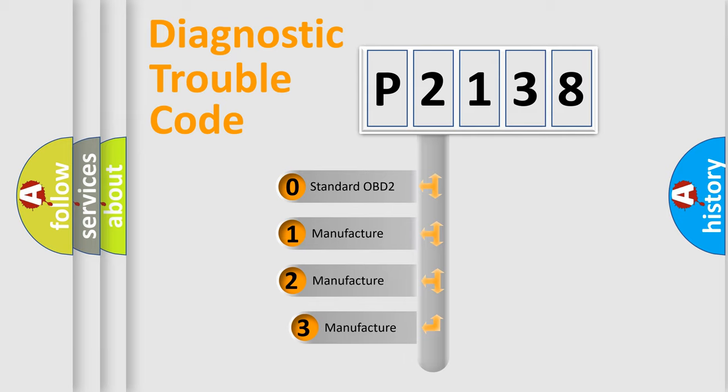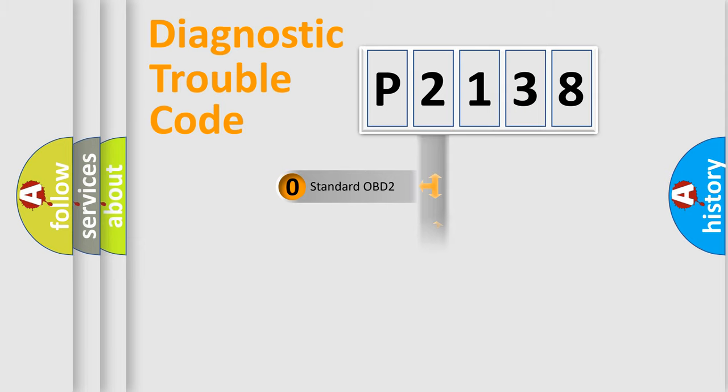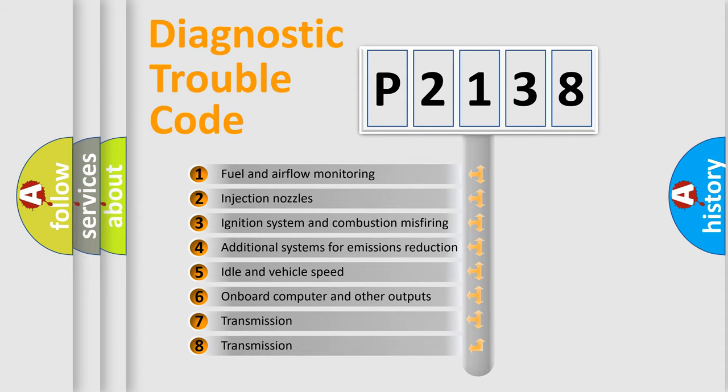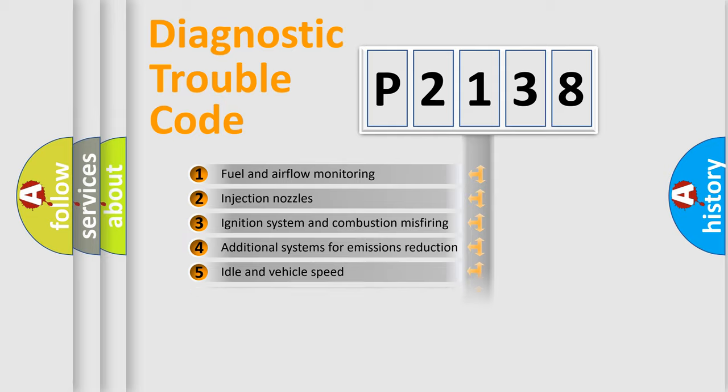If the second character is expressed as zero, it is a standardized error. In the case of numbers 1, 2, 3, it is a manufacturer-specific expression of the error. The third character specifies a subset of errors. The distribution shown is valid only for the standardized DTC code.